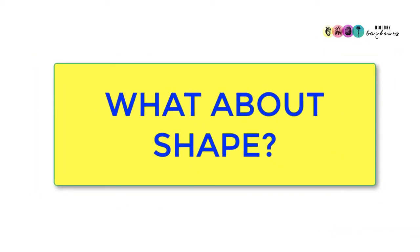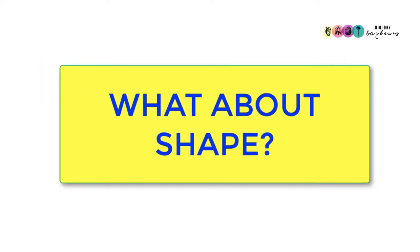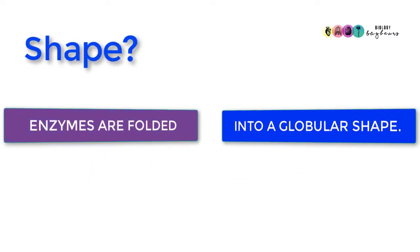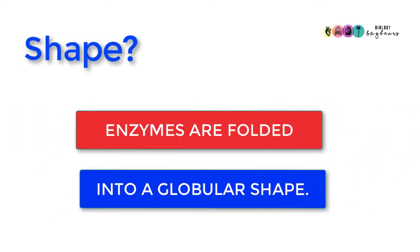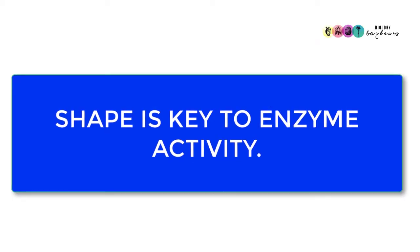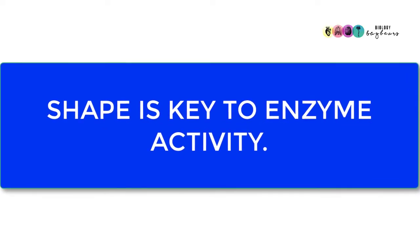It's also very important that we can talk about the shape of enzymes. Enzymes are folded into a globular shape, and it's really important that you say folded and globular. Shape is key to enzyme activity, so anything that alters the shape of an enzyme is going to impact on the enzyme's ability to catalyze.